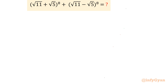Hello everyone, welcome to InfiKyaan. In this very exciting video on algebraic expressions, we are going to simplify one very interesting Singapore Math Olympiad problem. The problem is: (√11 + √5)⁸ + (√11 − √5)⁸. While solving this problem, we will mainly use algebraic identities. So let's get started.